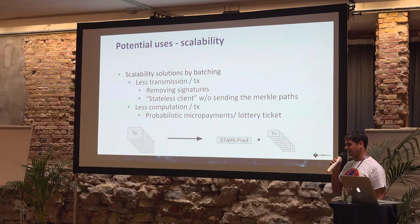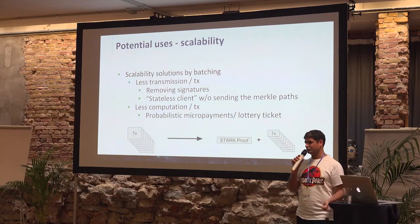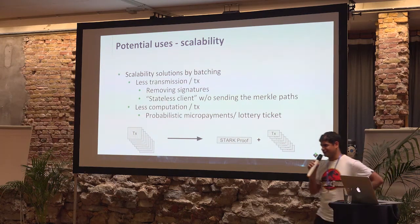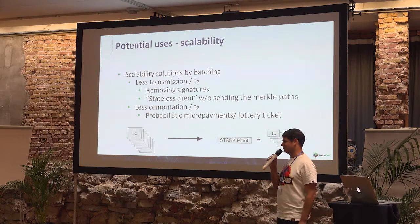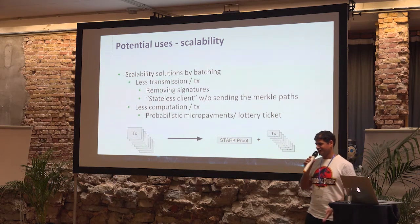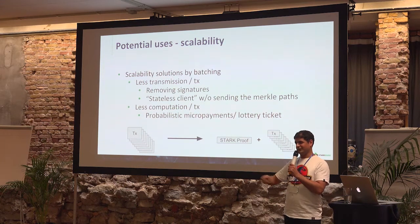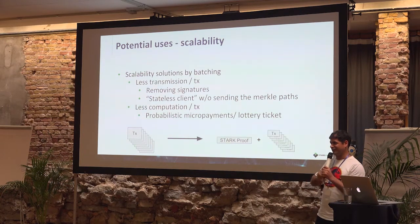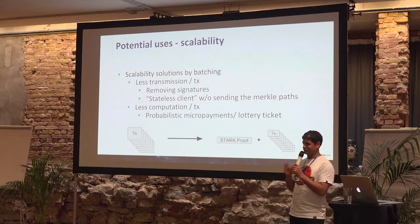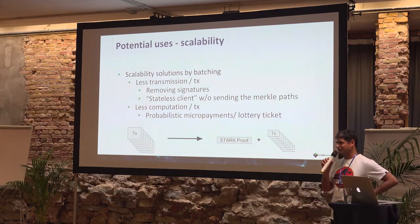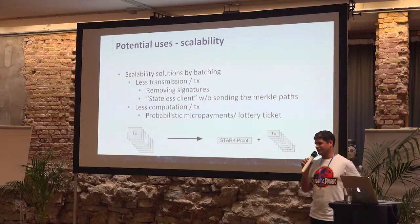I like to think about it more as lottery tickets. The idea is that instead of generating payments that each and every one of them has to be claimed on-chain, what two parties can do if they want to stream payments — the side that wants to pay gives lottery tickets as payments. This lottery ticket has, let's say, a chance of 1 in 10,000 to win. But the payer cannot cheat with the probability of winning of the lottery tickets. So basically side A pays side B with 1,000, 2,000, up to 100,000 lottery tickets. The other side knows all the time that he's being paid, but from 10,000 payments, just one is going to be claimed on-chain.